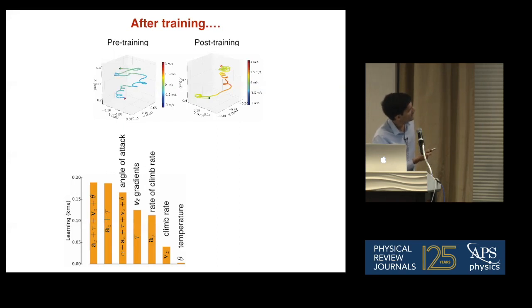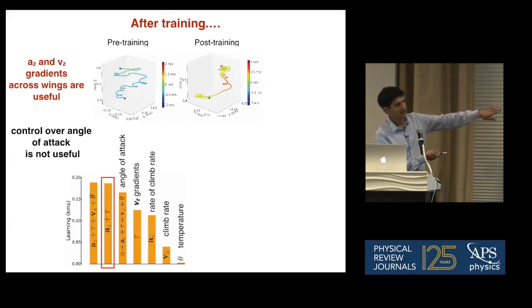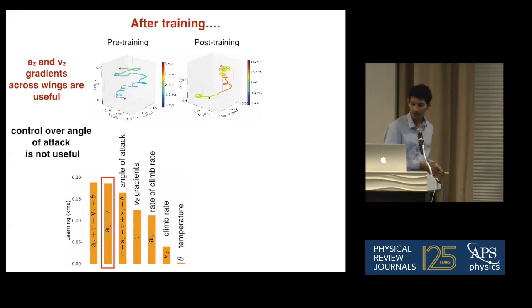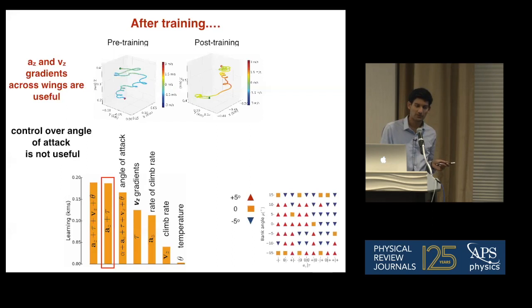You can also observe that control over angle of attack is not useful — including it in the state space gives no advantage. After training, you can derive a policy. The question we now want to answer is how do birds measure these quantities? We now have something specific we can look for in experiments, and we can also ask how these quantities are measured by a bird, and whether the algorithm still works in the field.